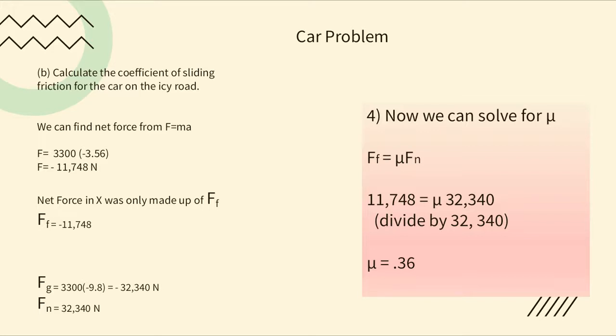Now we have force of friction and normal force, so we can solve for the coefficient of friction using equation 8. We only care about magnitude, not direction, so: 11,748 = μ × 32,340. Dividing both sides by 32,340 gives the coefficient of friction = 0.36.